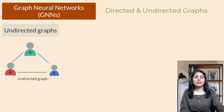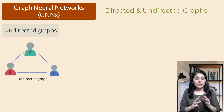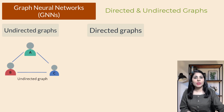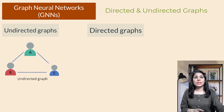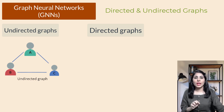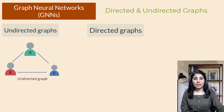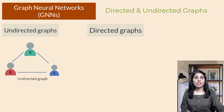Now let's understand directed and undirected graphs. Undirected graphs are used to show relationships where everyone is connected equally — like a big circle of friends where everyone is connected to everyone else. If there is an edge connecting node A to node B, then there is also an edge connecting node B to node A. In other words, the relationship between node A and node B is bidirectional.